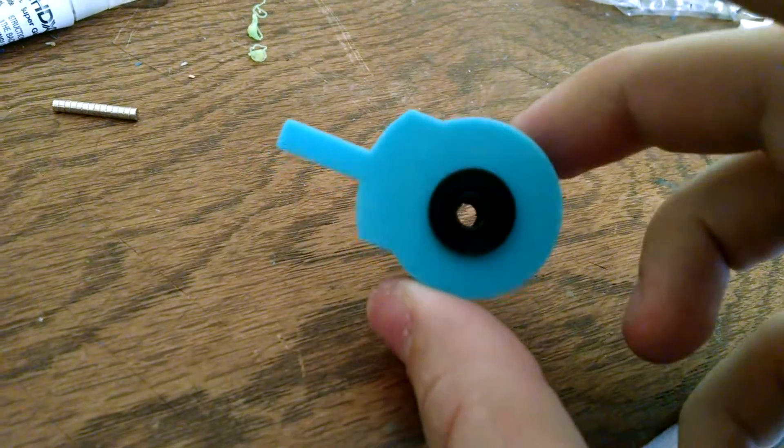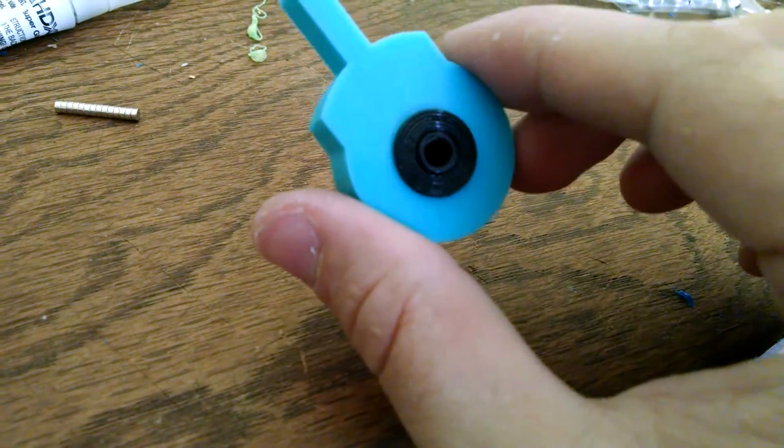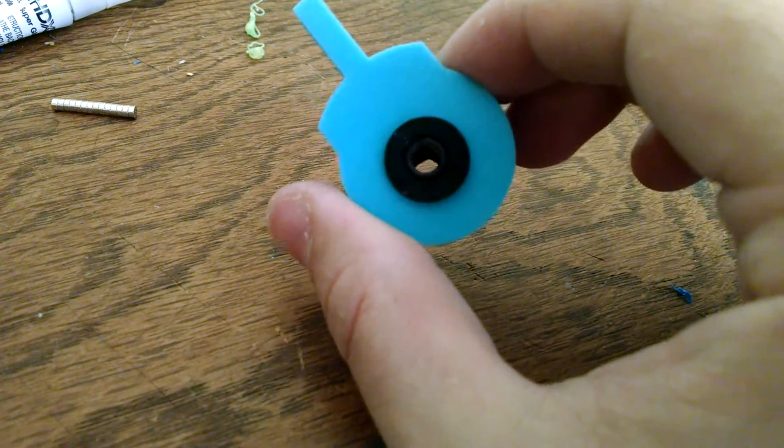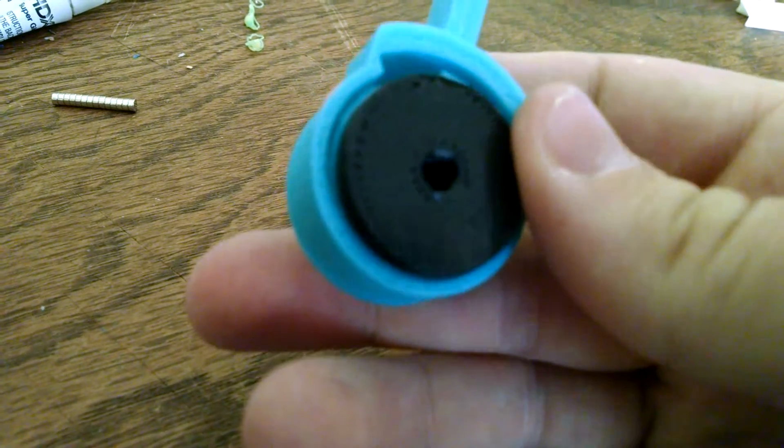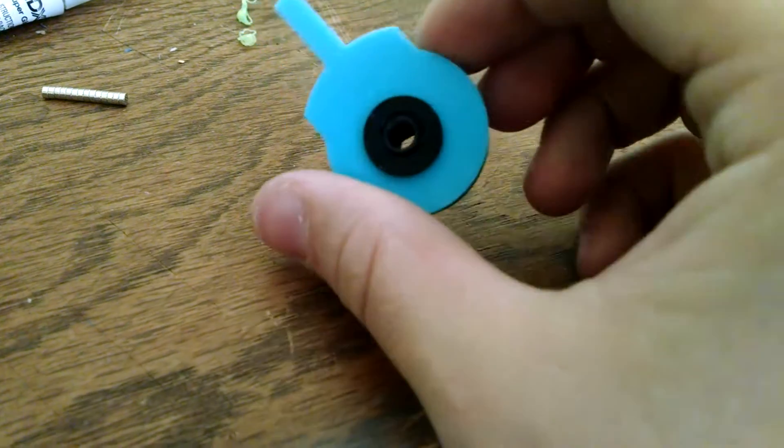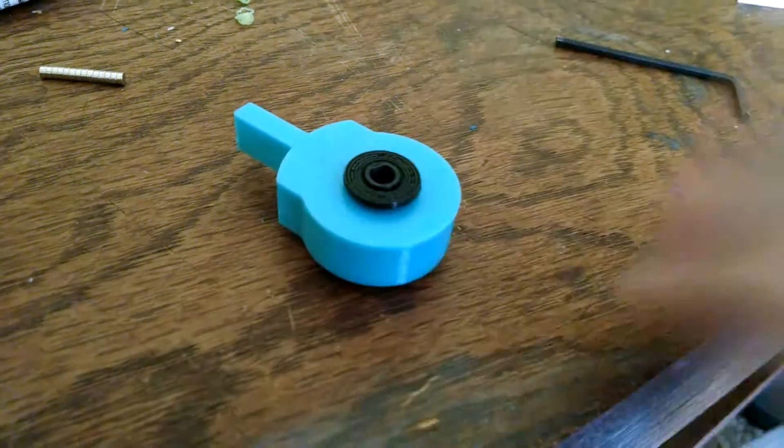And voila, you got the mechanism. And then you can see this just has a circle hole with a flat in it for the motor shaft. So there's no set screw or anything. Yep, that's it.